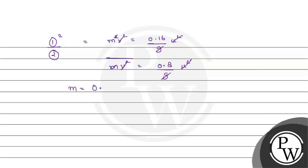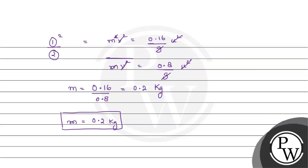Therefore m = 0.16/0.8 = 0.2 kg. Hence the value of m, which is being asked in the question, is 0.2 kg. I hope you understood it well. Thank you.